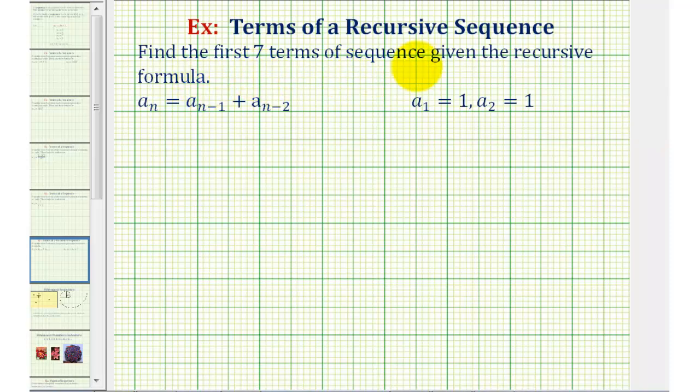We want to find the first seven terms of the sequence given the recursive formula a sub n equals a sub n minus one plus a sub n minus two. This is called a recursive formula because a sub n is based upon previous terms in the sequence.